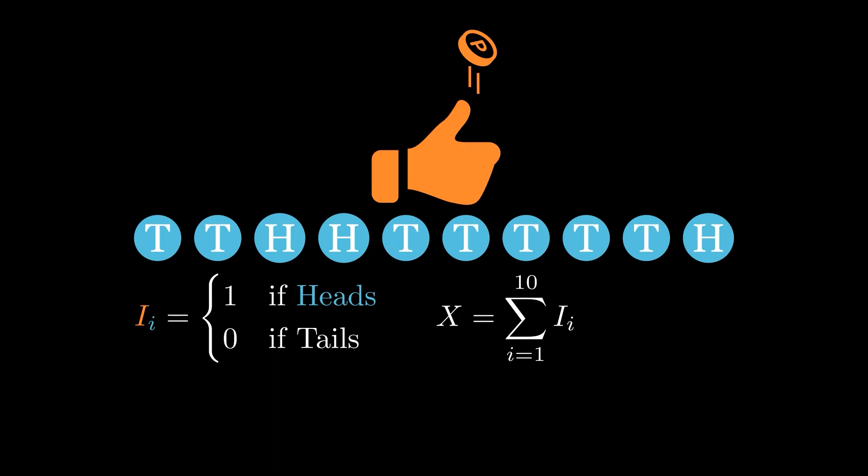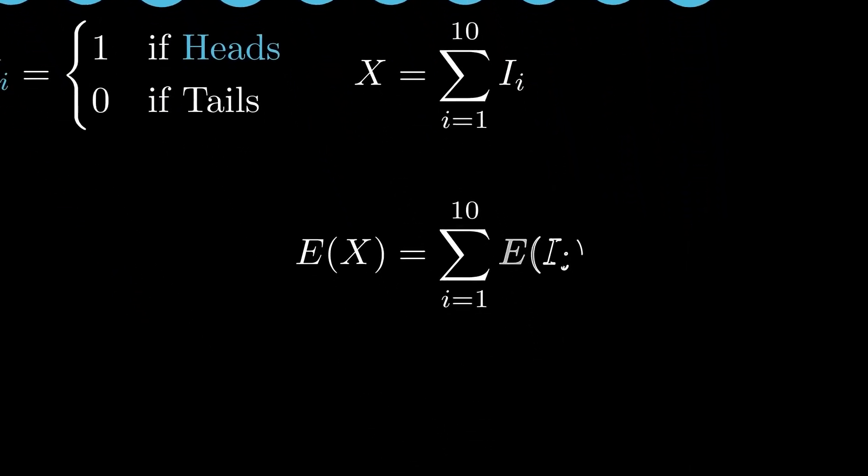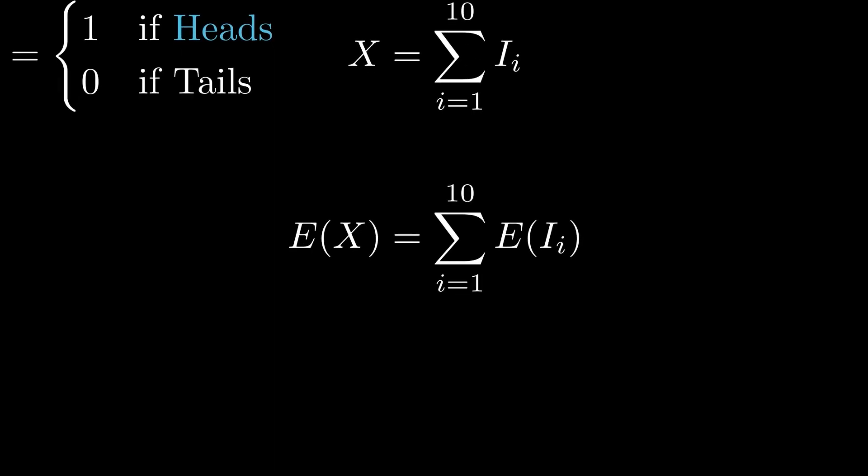Next, using the linearity of expectation, we can calculate the expected value of X as the sum of the expected values of the indicator random variables. If you don't know what linearity of expectation is, please watch our previous video on this topic where we explain it in detail.